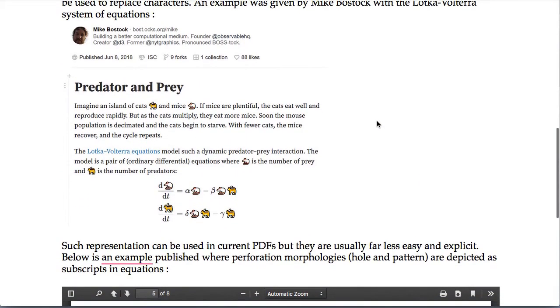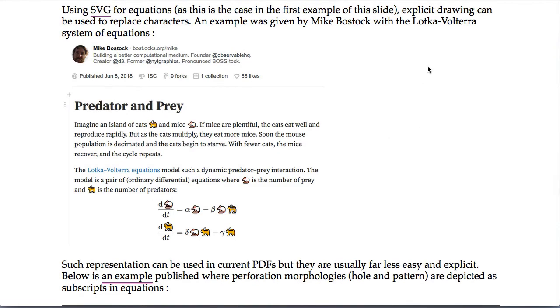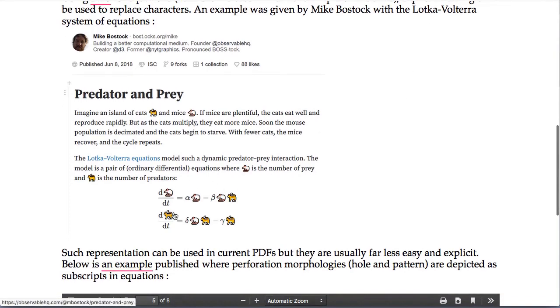But we can do more than that. For example here is an example by Mike Bostock. If you click on this link you will go directly to his own publication where he shows how he writes the Lotka-Volterra system of equations. This is the system of equations where we use emojis to represent the predator and prey system with cats and mice.